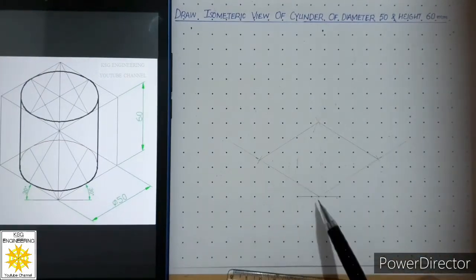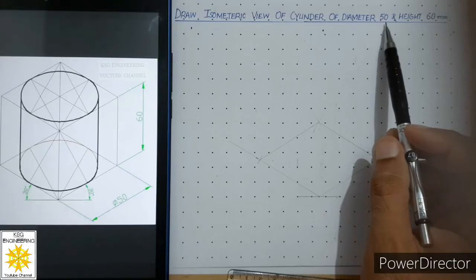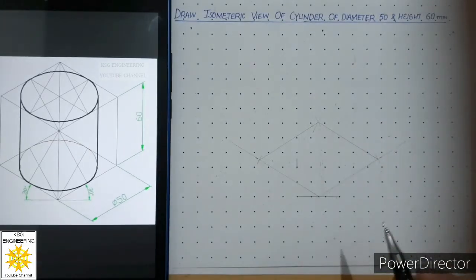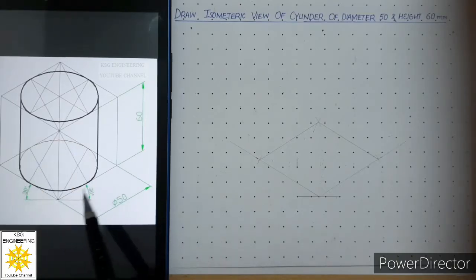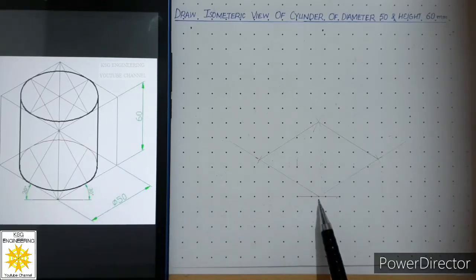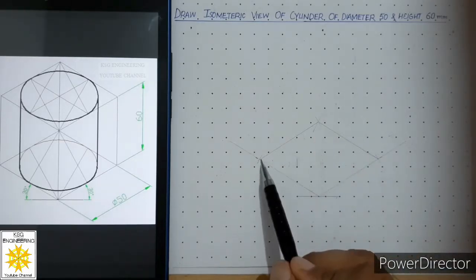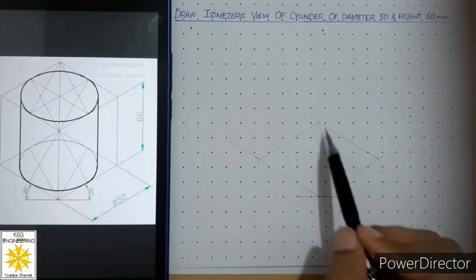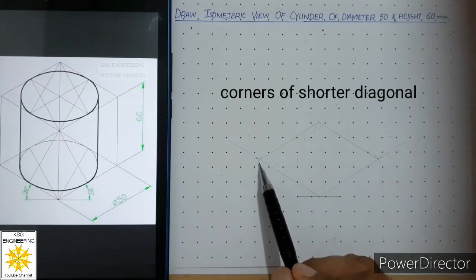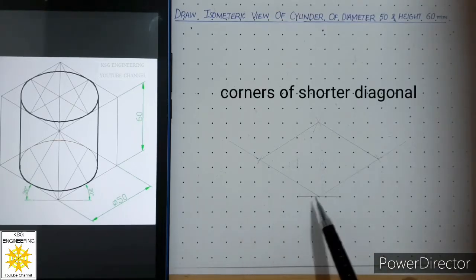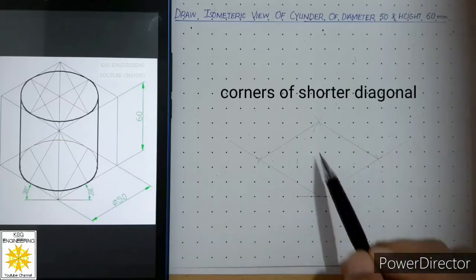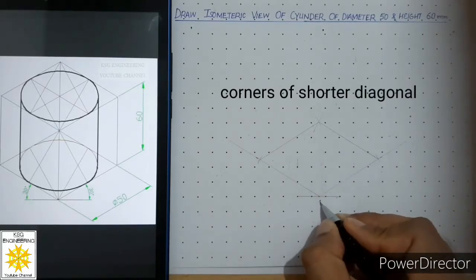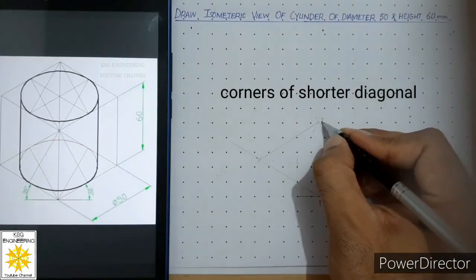So this is the isometric of a square of 50mm. Now we have to draw the base of the cylinder, which is an ellipse. For that we apply the four-center method. We have four corners; out of these we will pick the corners where the angle is more than 90 degrees. This is center number one and this is center number two.